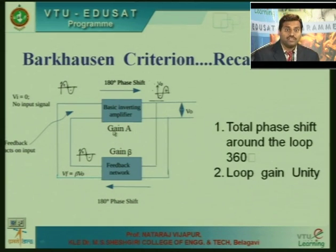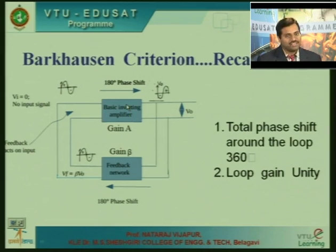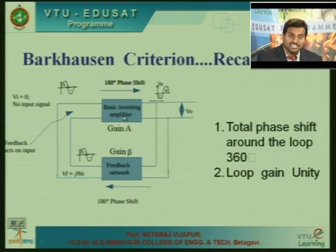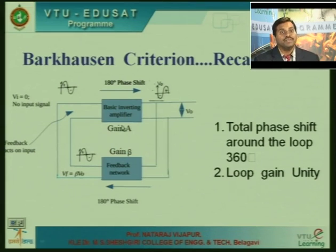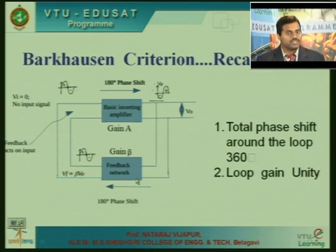The product of the amplifier gain A and the feedback network gain beta should be equal to 1. Then only the oscillations will be sustained in the circuitry. This we have already discussed.